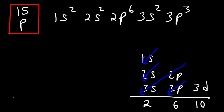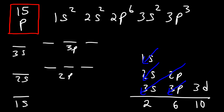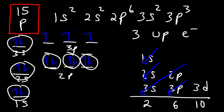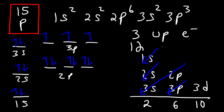Now we draw the orbital diagram, with levels 1S, 2S, 2P, 3S, and 3P. We fill up the lower energy levels first. In the 3P sublevel there are only 3 electrons. Based on this orbital diagram, phosphorus has 3 unpaired electrons. The remaining 12 are paired electrons — and 3 plus 12 equals 15.